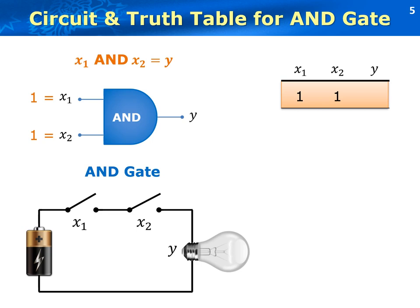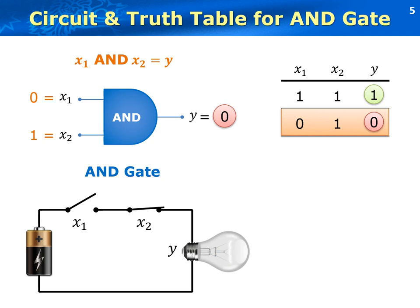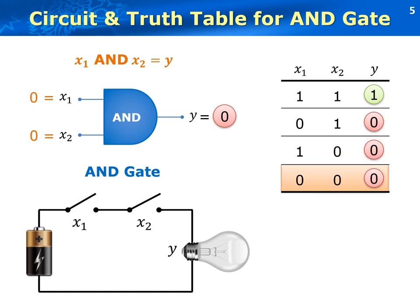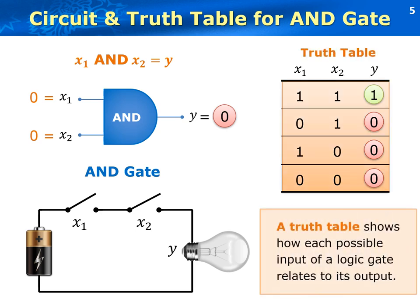When both switches are pressed, the bulb lights, implying that output y is 1. If we change x1 to 0, the bulb is off, whose output is 0. Similarly, if x1 is off and x2 is on, then the bulb is off. Finally, if we switch on both x1 and x2, the output is off. The above process is recorded by a truth table, which shows how each possible input of the AND gate relates to its output. This table is called a truth table, which can help us understand the behavior of the AND logic gate. With two inputs x1 and x2, there are four input combinations.